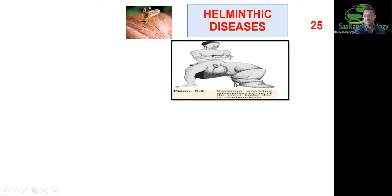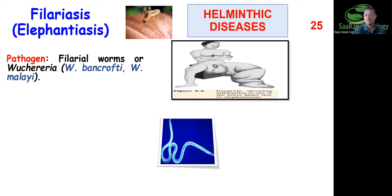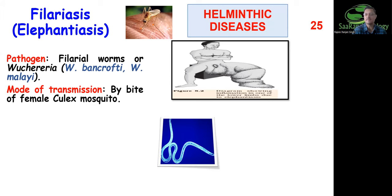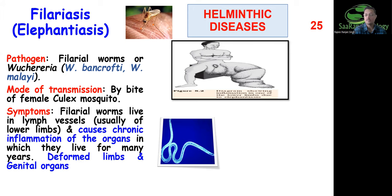Another helminthic disease is filariasis, which causes elephantiasis — the affected limb swells to resemble an elephant's foot. The causal organisms are Wuchereria bancrofti and Wuchereria malayi — both filaria worms and nematodes. Mode of transmission is through the bite of female Culex mosquitoes. The worms live in the lymph vessels; organs become inflamed, lymph vessels get blocked, and limbs swell enormously. The genital organs can also be deformed. Filariasis is a very important disease to know.